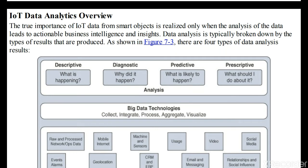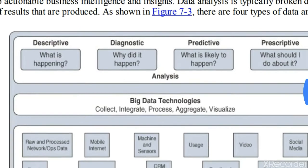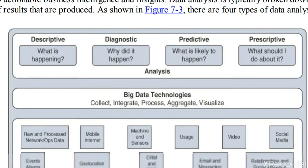Hello students, today we will go through IoT data analytics overview. Here they have explained four types of data analysis results. You have four types: one is descriptive, second is diagnostic, third is predictive, and fourth is prescriptive. We will go through them one by one.